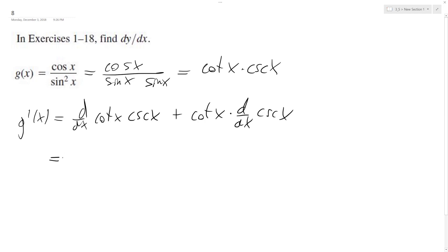Alright and continuing further, we get the derivative of the cotangent of x is negative cosecant squared of x times the cosecant of x.